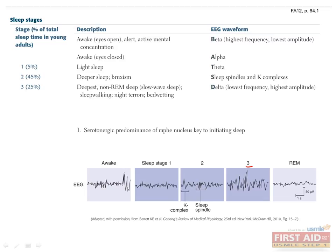How can sleepwalking, night terrors, and bedwetting be treated? Benzodiazepines are useful for treating night terrors and sleepwalking. Imipramine is used to treat bedwetting or enuresis because it decreases stage 3 sleep.